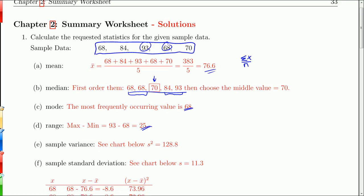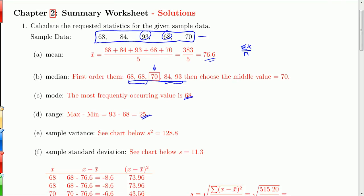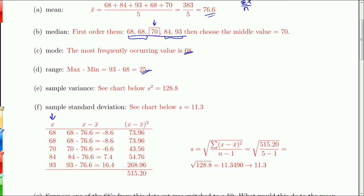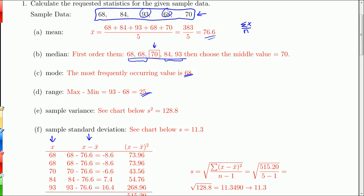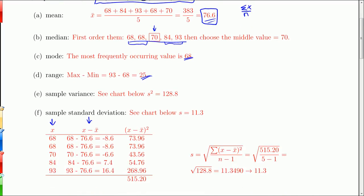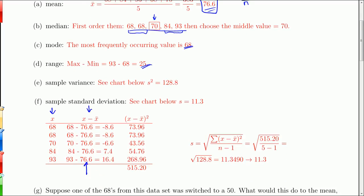The variance and the standard deviation we're going to build with this chart. So take a look. Here's our numbers. We're going to put them in a chart in a column. So here they are: 68, 68, 70, 84, 93. And in the next column, we're going to take each x value and subtract the mean. Now, the mean was calculated up here as 76.6. So I take each one of these values and subtract 76.6. So we get these differences here. And then we have to square them, which makes all those values positive.